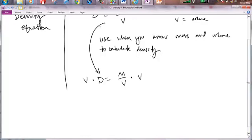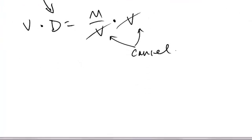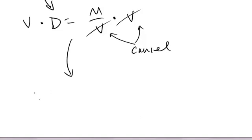So if I multiply both sides by V, what happens? This V and this V should cancel. Right? So V times D equals M.